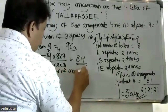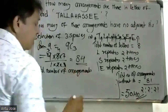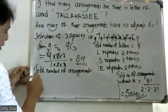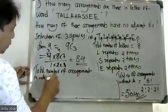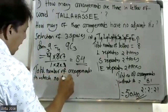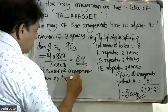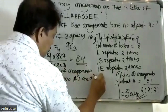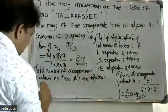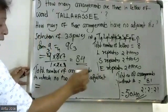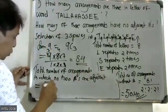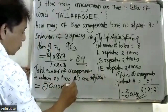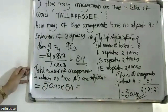Total number of arrangements in which no two A's are adjacent is equal to the arrangements of the 8 non-A letters multiplied by 9C3, which gives us the factor of 84.